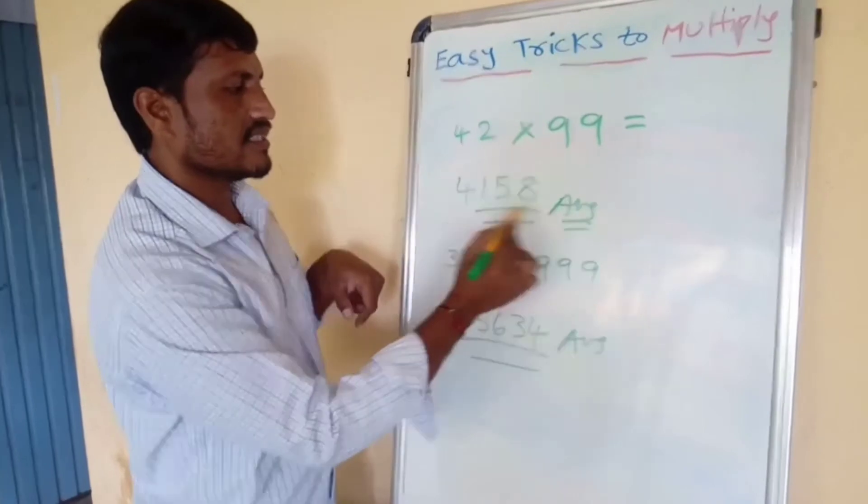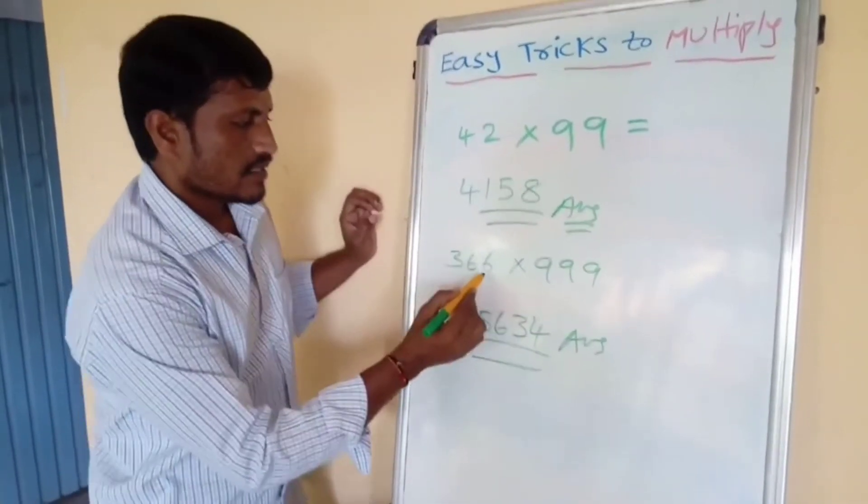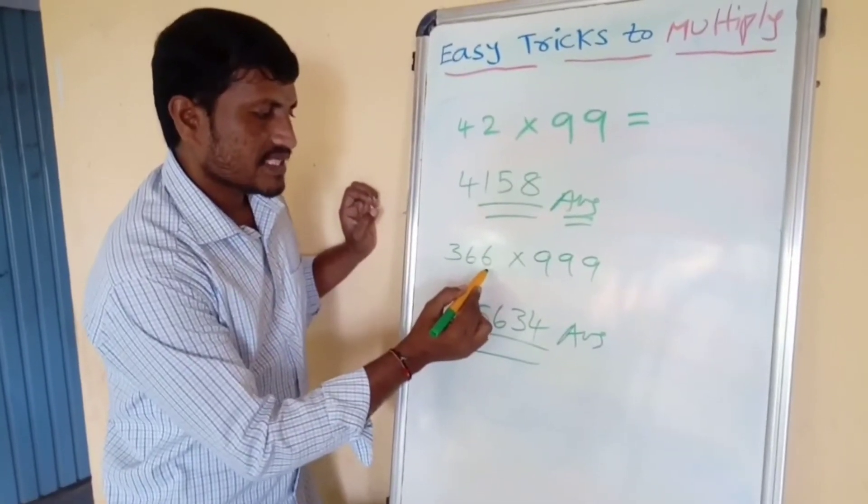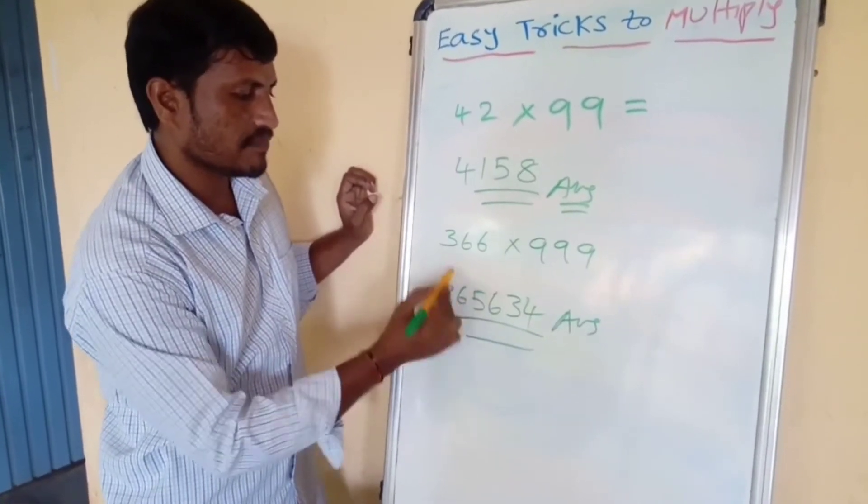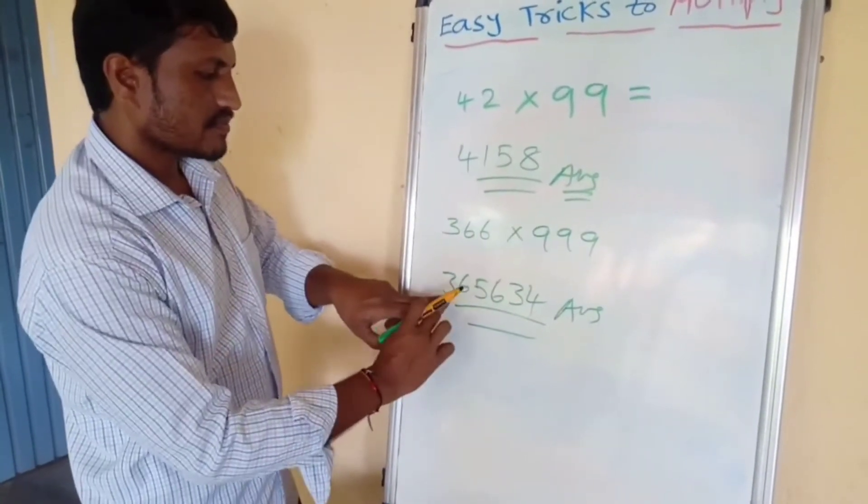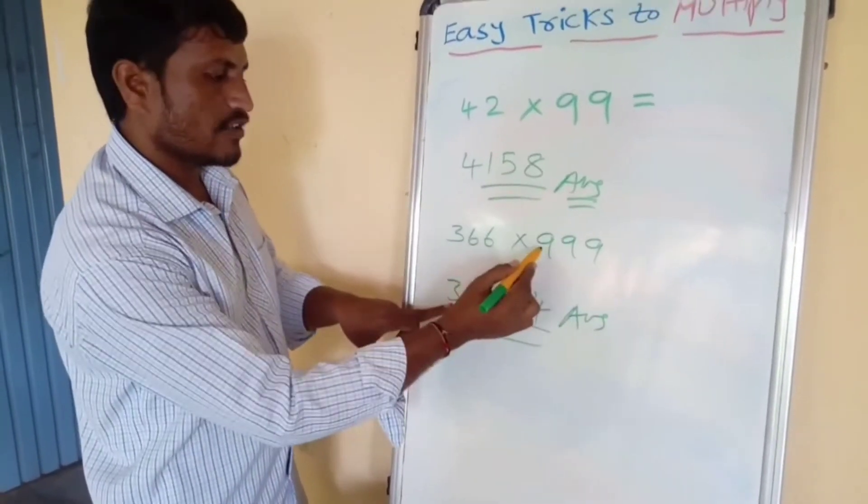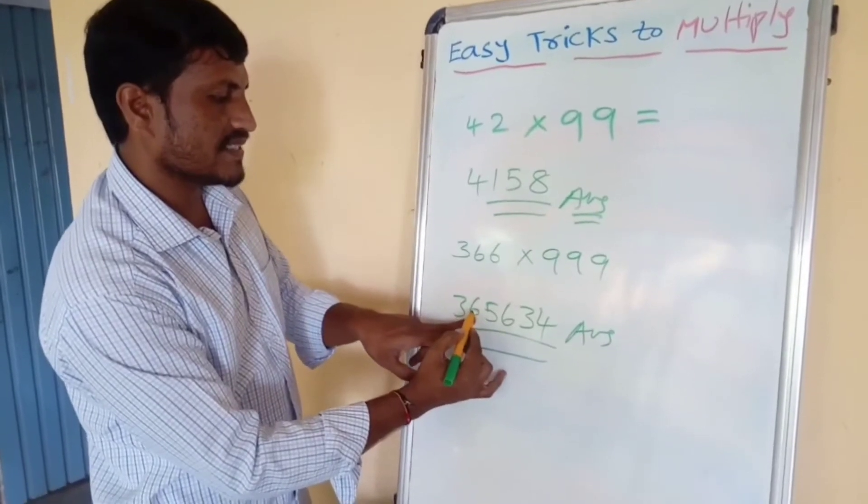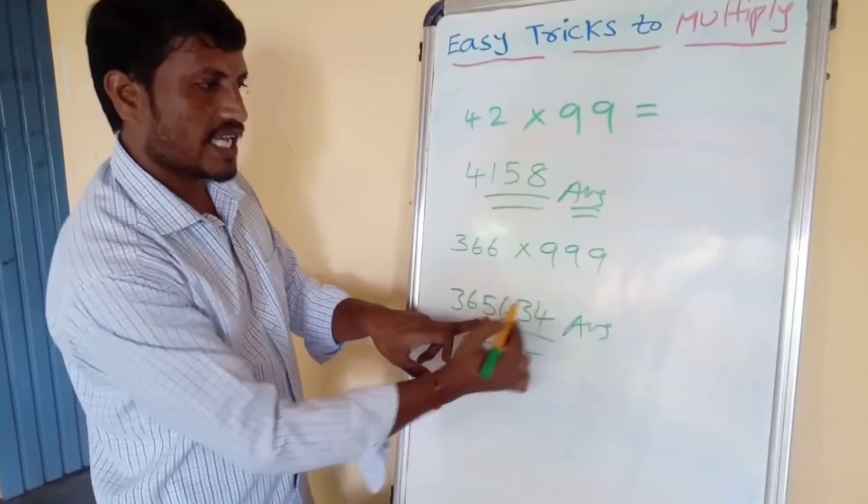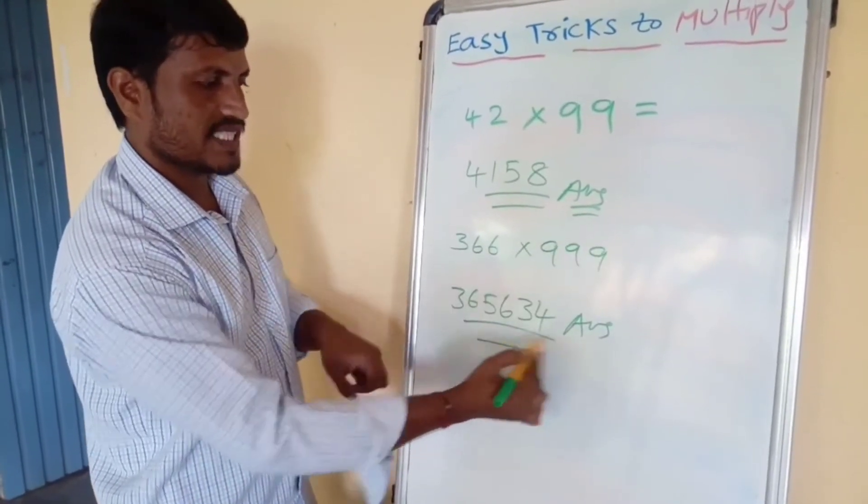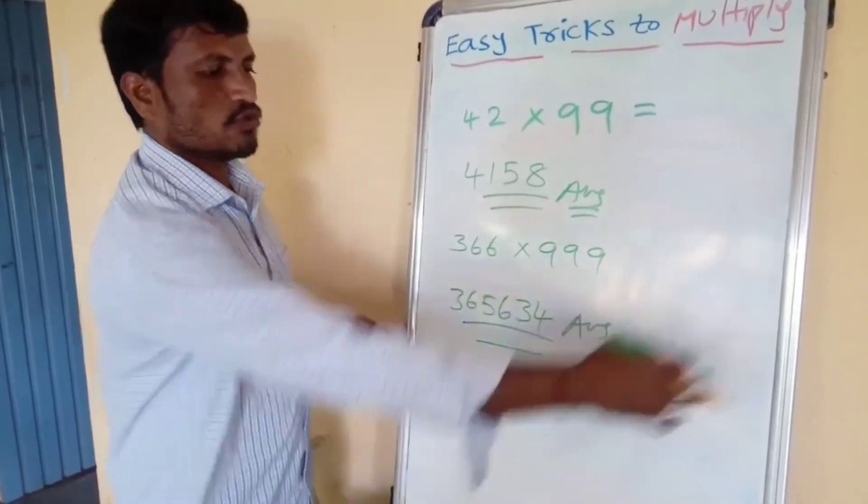This is the trick. And in this also, you minus one number from the first digit. 366 minus 1 is 365. And the complement gives 634. This is the answer. This is the trick.